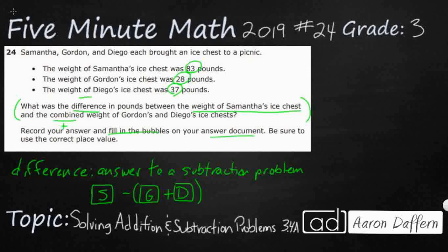Gordon is 28, Diego is 37, and Samantha is 83. Let's combine Gordon and Diego first using vertical addition: 28 plus 37. Eight and 7 is 15, carry the 1. One and 2 is 3, and 3 and 3 is 6. So 65 pounds is what Gordon and Diego's ice chests weigh altogether.